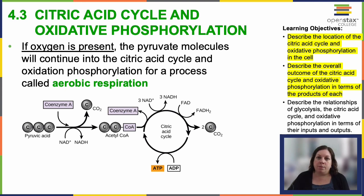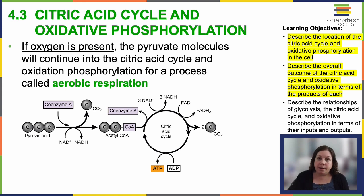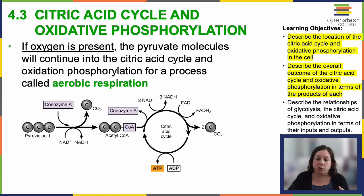This cycle both builds and breaks down molecules. We're breaking down that pyruvate and releasing CO2 as we break it apart. We are making ATP — adding that third phosphate group on — and we're also making NADH and FADH2. So it's both catabolic and anabolic.